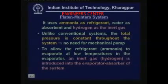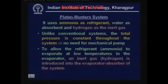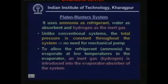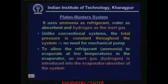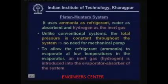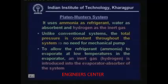To allow the refrigerant to evaporate at low temperatures in the evaporator, an inert gas is introduced into the evaporator-absorber section. When discussing Platen-Munters systems, you must make a distinction between total pressure and partial pressure. The total pressure is the same throughout the entire system, but the partial pressure will be different at different locations. In the evaporator section, P_total equals P_ammonia plus P_hydrogen.